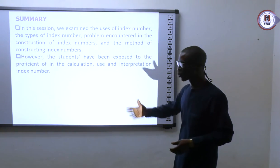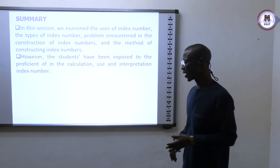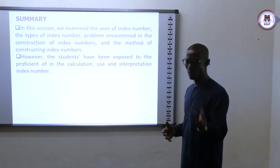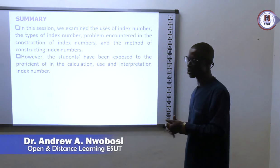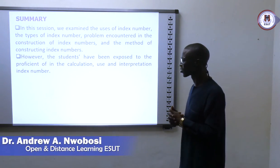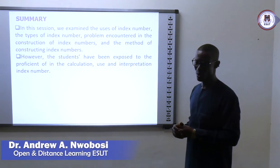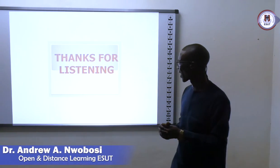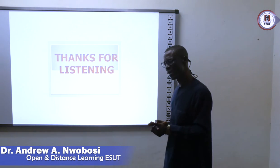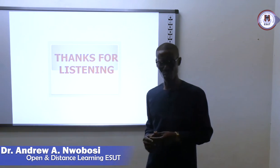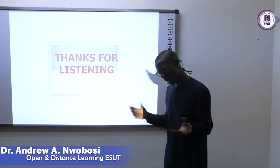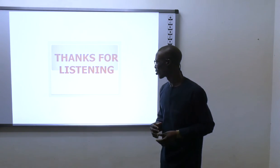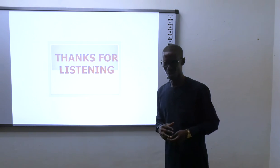In summary, we have discussed hypothesis testing — how to test hypotheses, determine outcomes, and take decision rules. We also touched on regression analysis — what it is, the types of data used, how to measure it, and the important parameters involved. Lastly, we covered index numbers — what they are, the different types, how to construct them, and the problems encountered in index number construction. That concludes our class for today. Thank you.